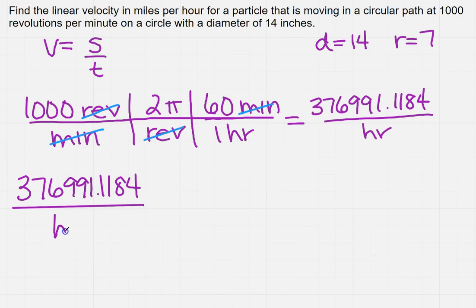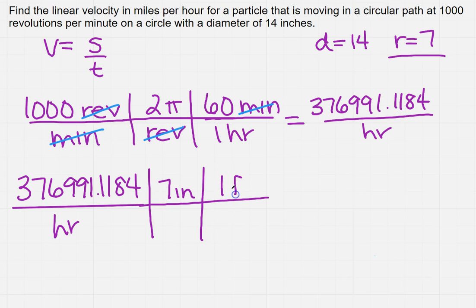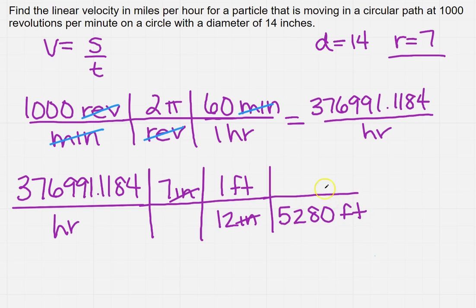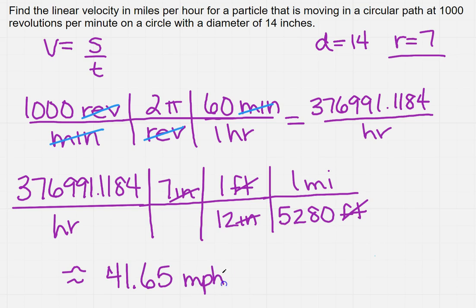The radius given is 7 inches. I can convert inches into feet: in one foot there are 12 inches, so the inches will cancel. But I don't want feet — I want miles. There are 5,280 feet in one mile, so the feet are going to cancel. Now I have miles per hour, which is what I want. I do this calculation and get approximately 41.65 miles per hour.